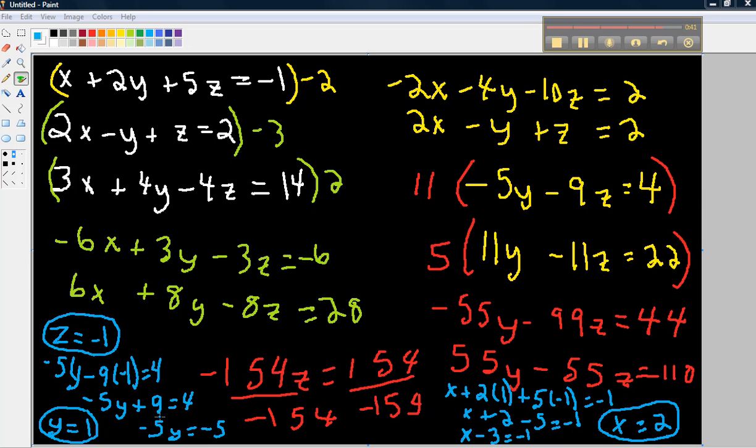So I have y equals 1. Once I walk through this process over here and solve. Because what I did, I subtracted 9 from both sides. When I subtract 9, I have negative 5y equals negative 5. And then divide this by negative 5. I didn't show that step here, but it's going to be y equals 1.